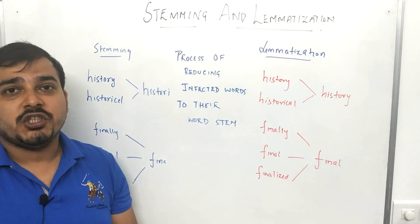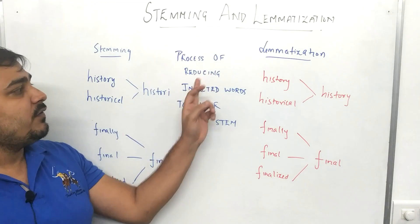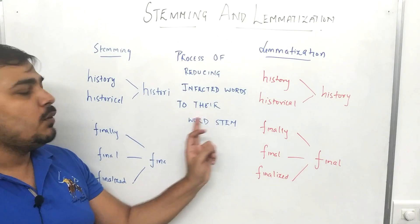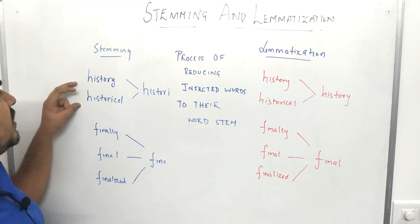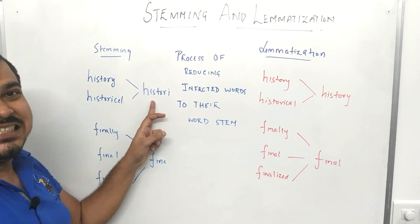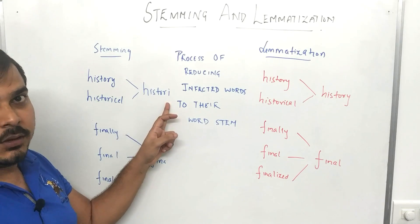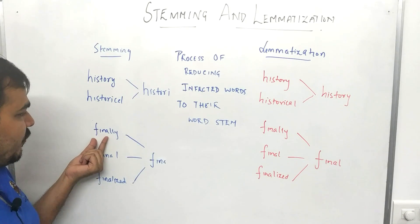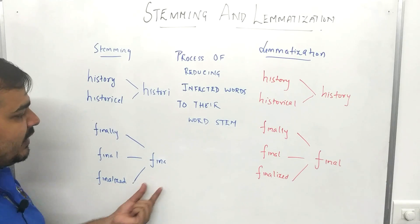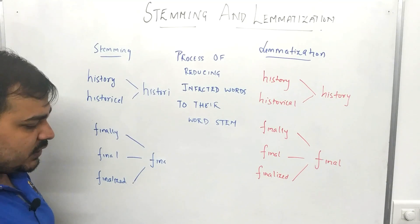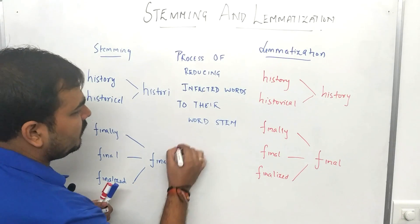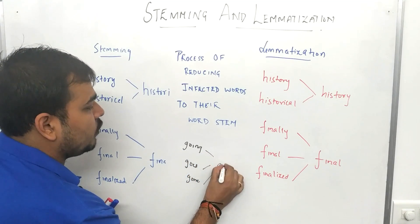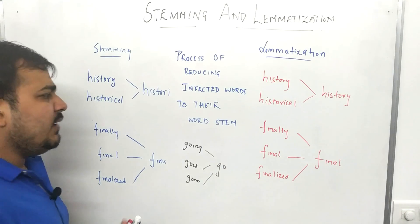Let us understand what stemming and lemmatization mean. The Wikipedia definition: stemming is the process of reducing inflected words to the word stem. So stemming reduces an inflected word to the word stem. For example, the words 'history' and 'historical' get converted to 'histori' (h-i-s-t-o-r-i). Similarly, 'finally,' 'final,' and 'finalized' get reduced to the word stem 'fina.' There are also use cases like 'going,' 'go,' 'goes,' and 'gone' — applying stemming converts these all to 'go.'